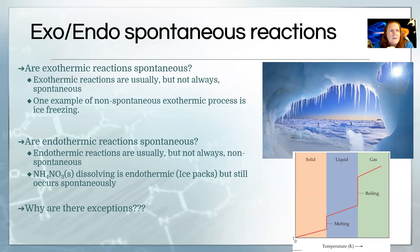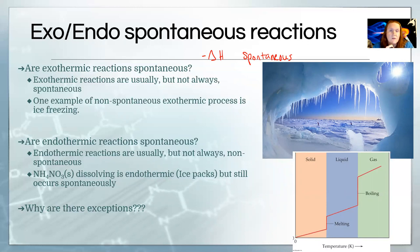If I think about just exothermic processes, classically in Chapter 5 we stated that things that have a negative delta H are spontaneous. That is normally a true statement. Delta H's are really important in figuring out if things are going to happen. But it's not always true. One thing that's not spontaneous but is exothermic is ice freezing.